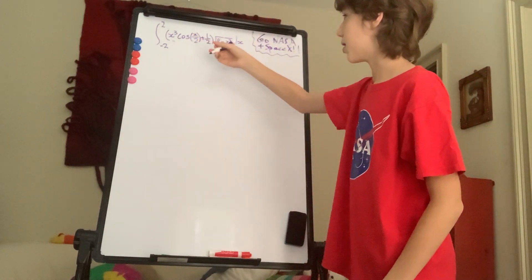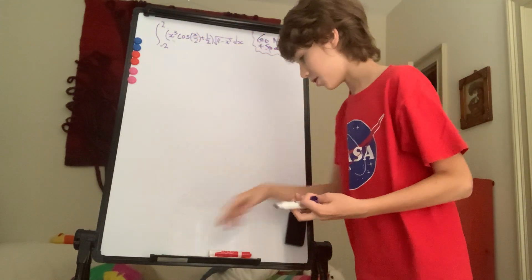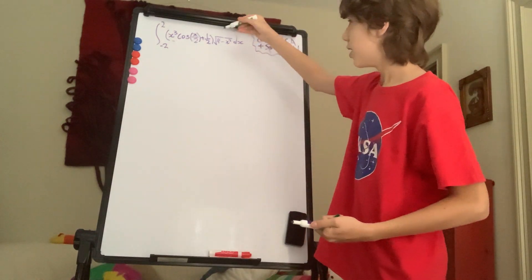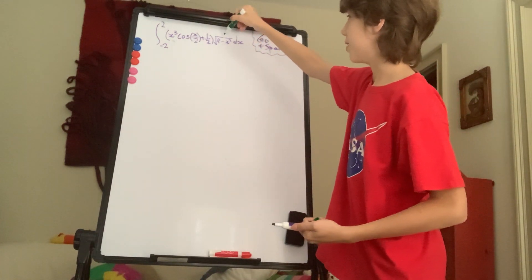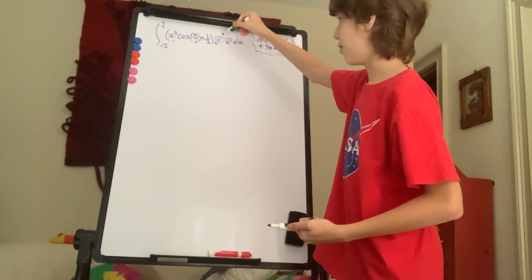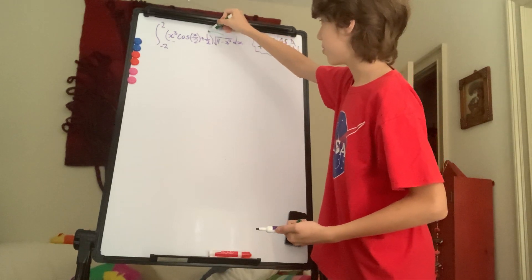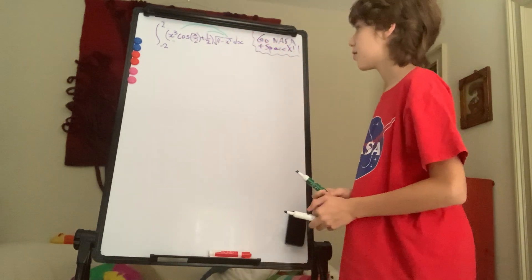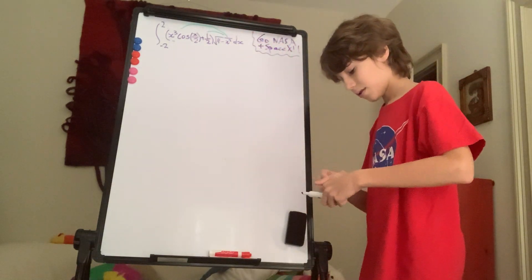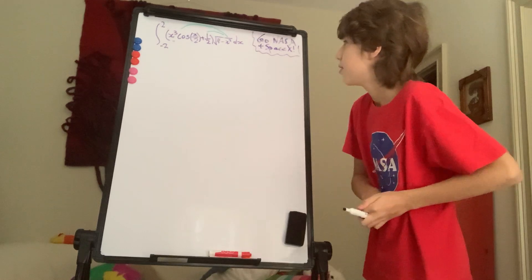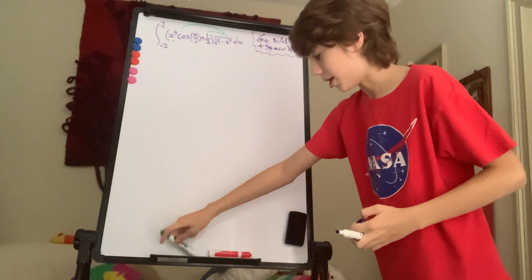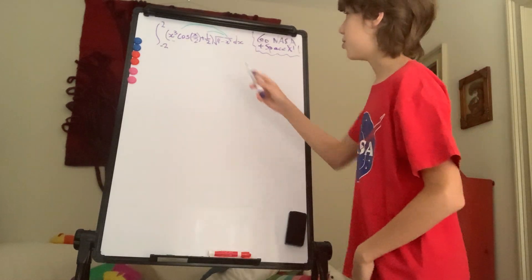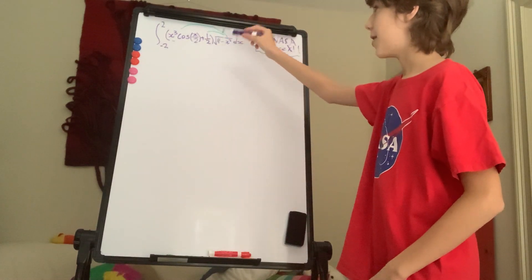So first of all, what I want to do is I want to actually split this integral up, and to do that, I'm going to multiply this radical out. So I'm going to first multiply it to that, and then to that. Then what I want to do is, well, obviously compute that. After doing that, I'm going to actually split this up.